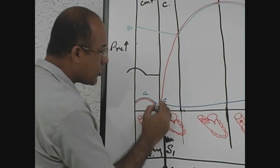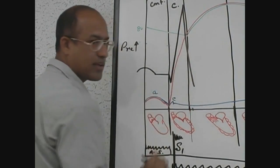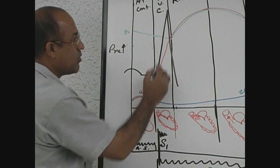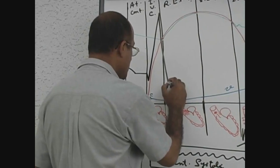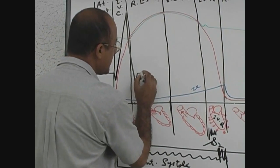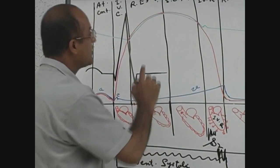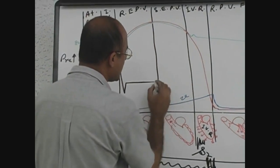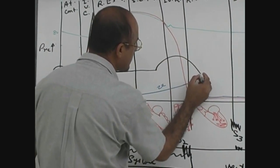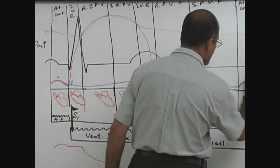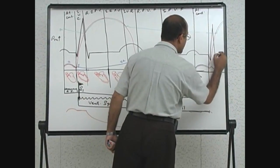At the onset of ventricular contraction, there is ventricular depolarization represented by the QRS complex. During the ST segment, the plateau is present and the ventricle is still contracting. When relaxation starts, repolarization has begun, leading to the T wave. This is how the ECG can be superimposed on the cardiac cycle, and the next P wave and QRS follow for the next cycle.